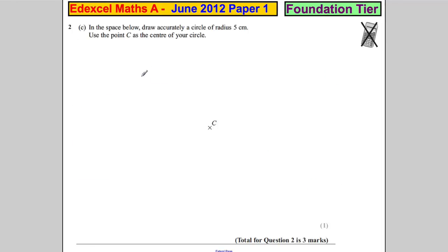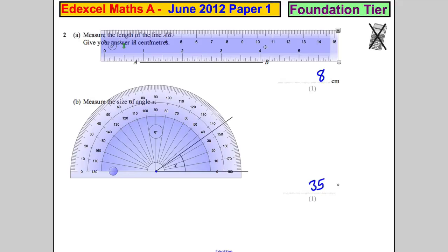Okay, now next part: in the space below draw accurately a circle of radius 5 centimeters. Use the point C as the center of your circle. So get your ruler back.